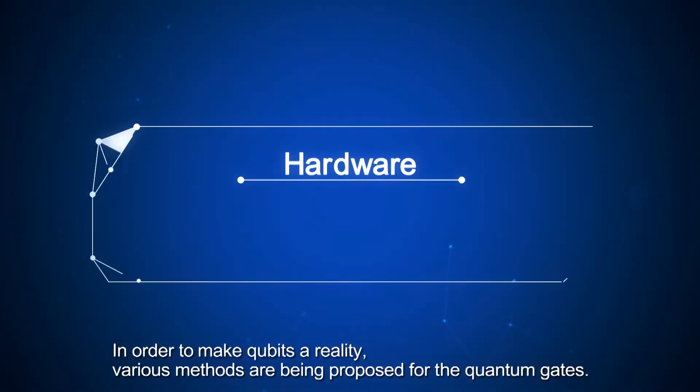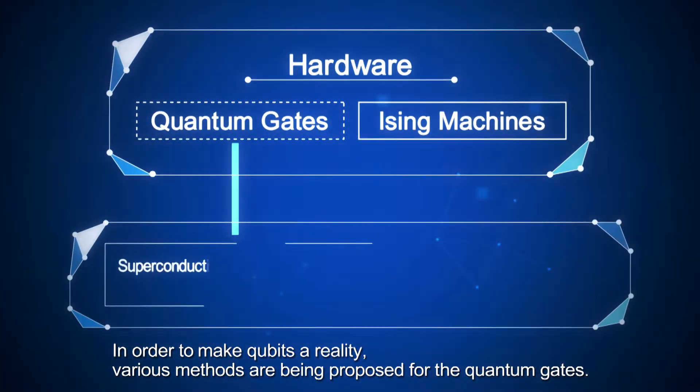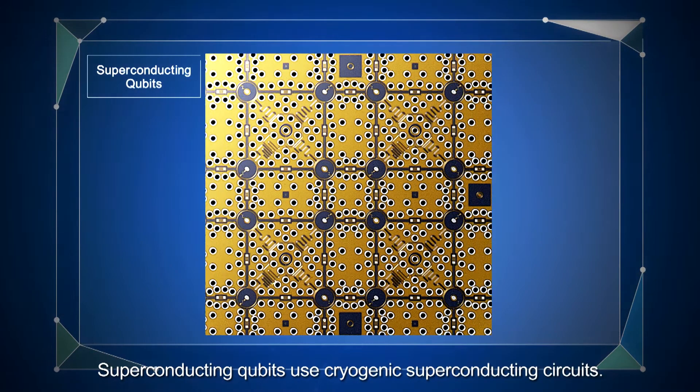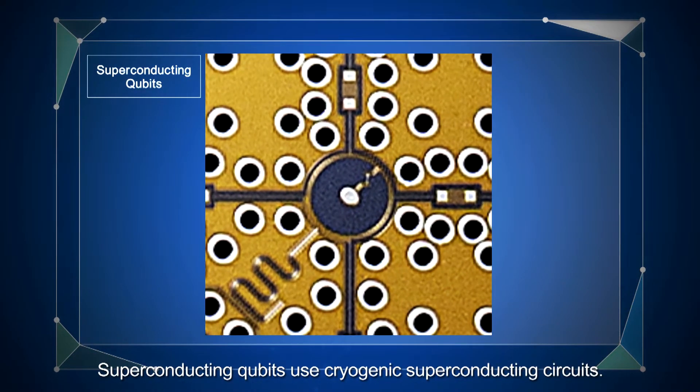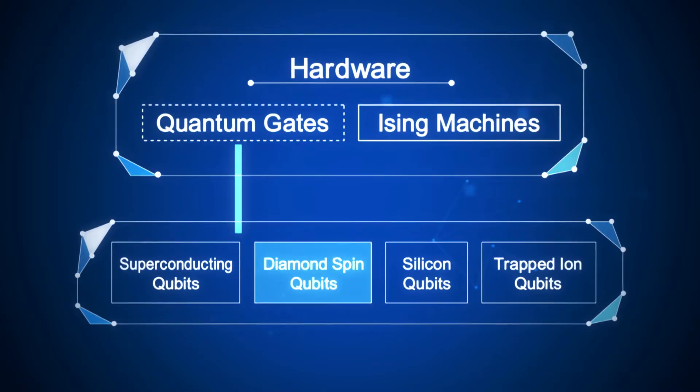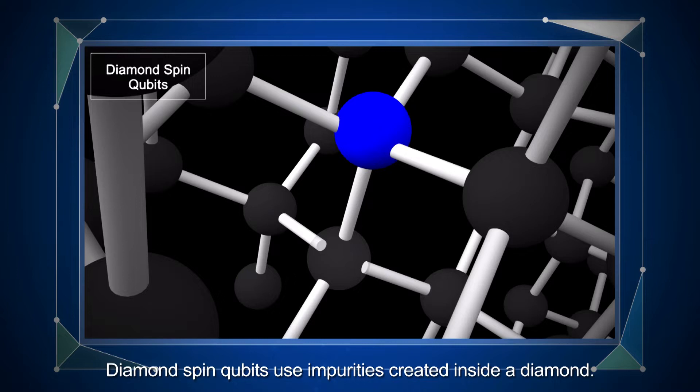In order to make qubits a reality, various methods are being proposed for the quantum gates. Superconducting qubits use cryogenic superconducting circuits. Diamond spin qubits use impurities created inside a diamond.